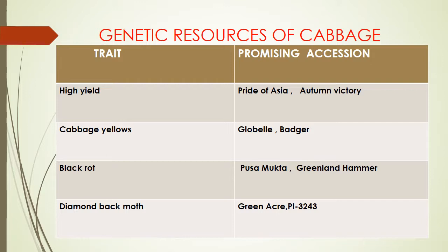Genetic resources of cabbage for yield — promising accessions are Pride of Asia and Autumn Victory. For cabbage yellows: Globela and Budgar. For black rot: Pusa Mukta and Greenland Hammer. For diamondback moth: Green Acca and PI 310,243.